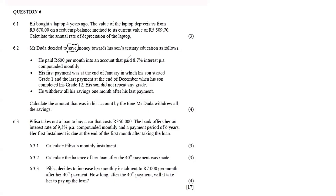He paid R600 per month into an account that paid 8.7% interest per annum compounded monthly. His first payment was at the end of January when his son started Grade 1, and the last payment at the end of December when his son completed Grade 12 — exactly 12 years. He withdrew all his savings one month after his last payment, meaning the accumulated amount was left there for a further one month before withdrawing.